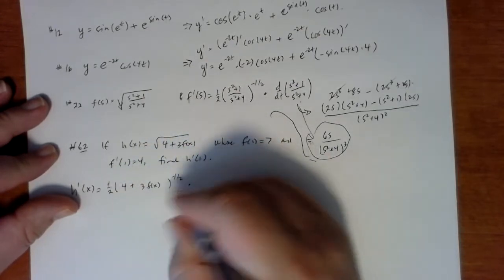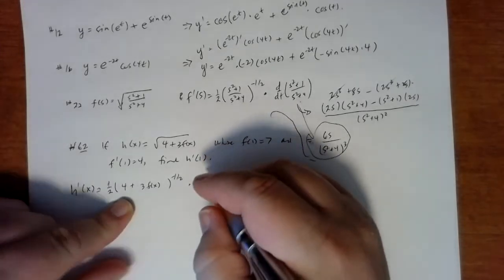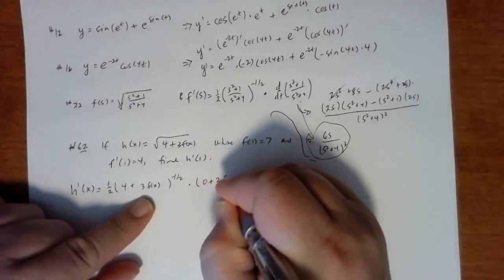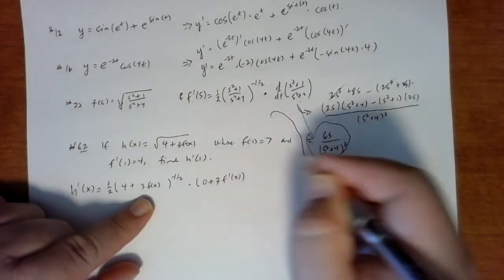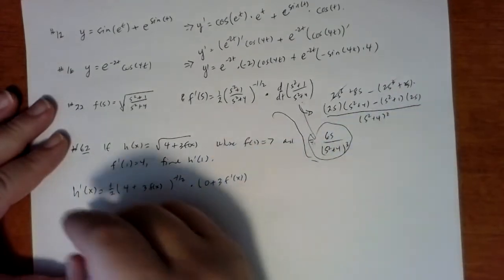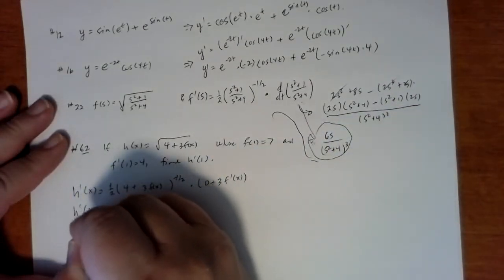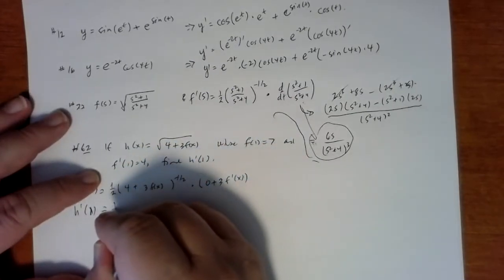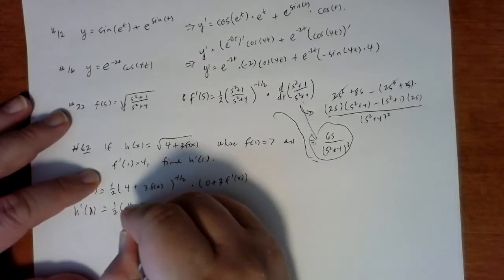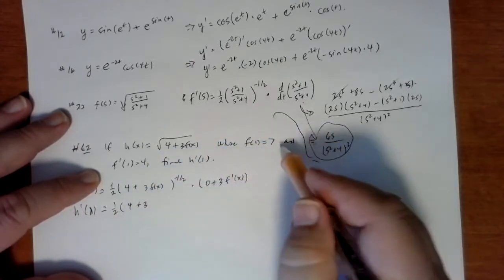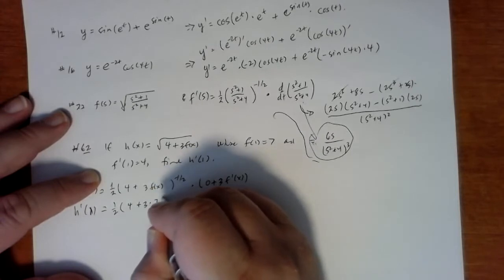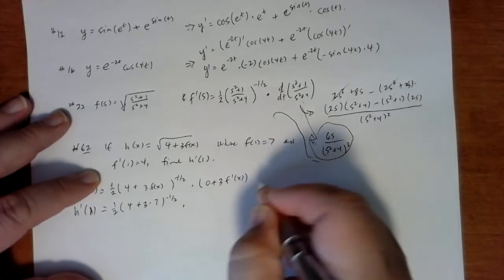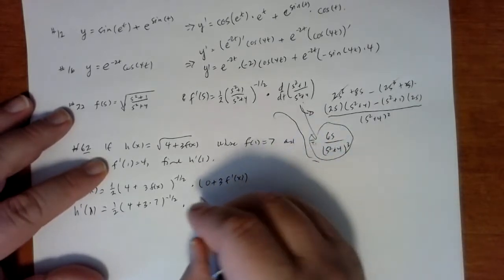Then we multiply by the derivative of the inside function — the derivative of 4 is 0, so that's 0 plus 3 times f prime. This is our derivative. So h prime of 1 will be one-half times (4 plus 3 times f of 1) — f of 1 being 7 — to the minus one-half, times 3 times f prime of 1, which is 4.